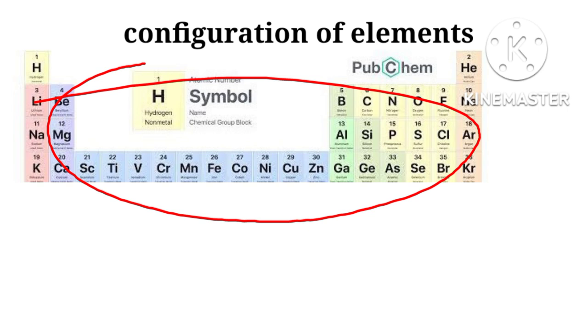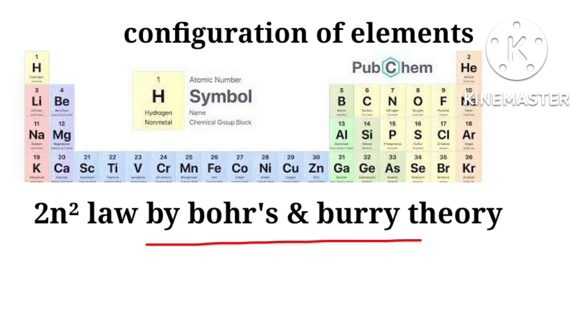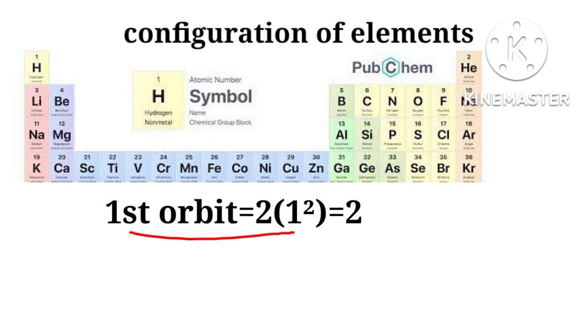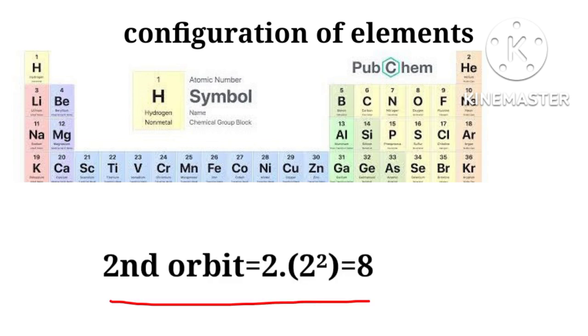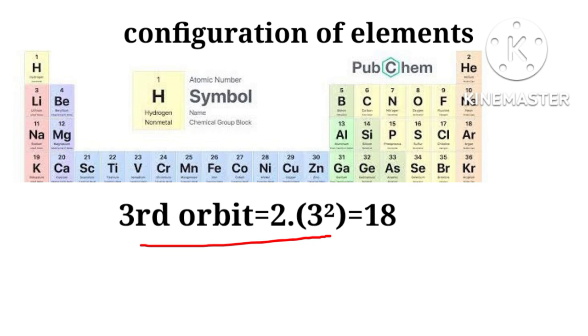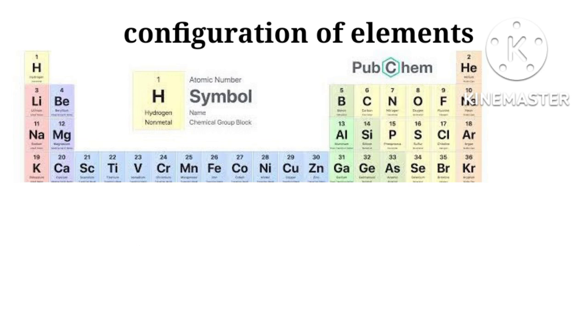According to the 2n squared law of Bohr and Bury theory, the first orbit can have not more than 2, second 8, and third 18 electrons. The configuration of the first 20 elements are as follows.